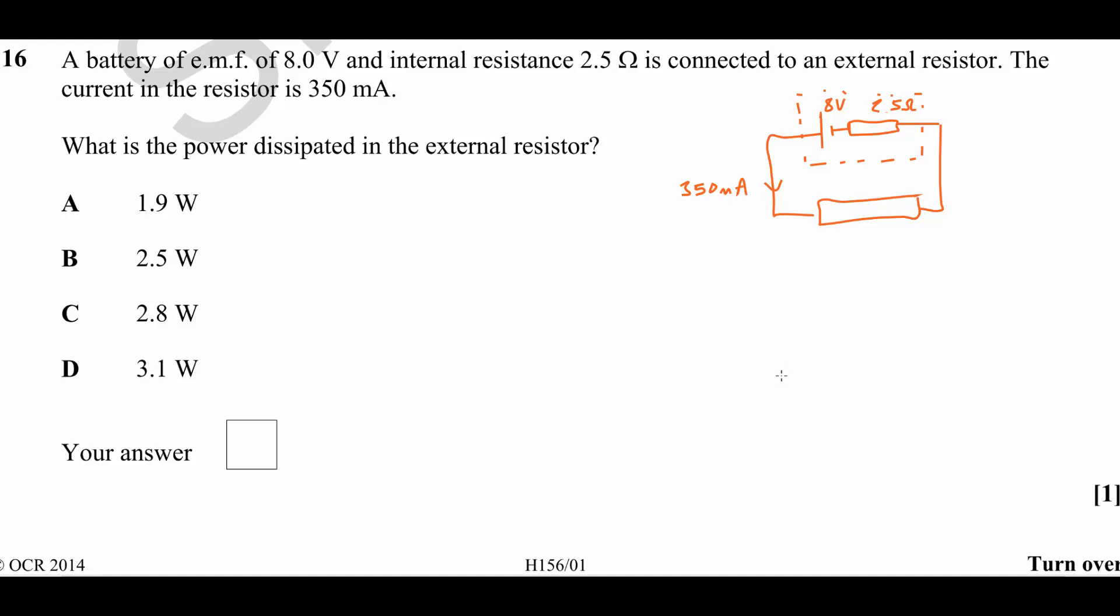What is the power dissipated in the external resistor? To work this out, we need to use the equation P equals IV, which will allow us to work out the power dissipated in that resistor.